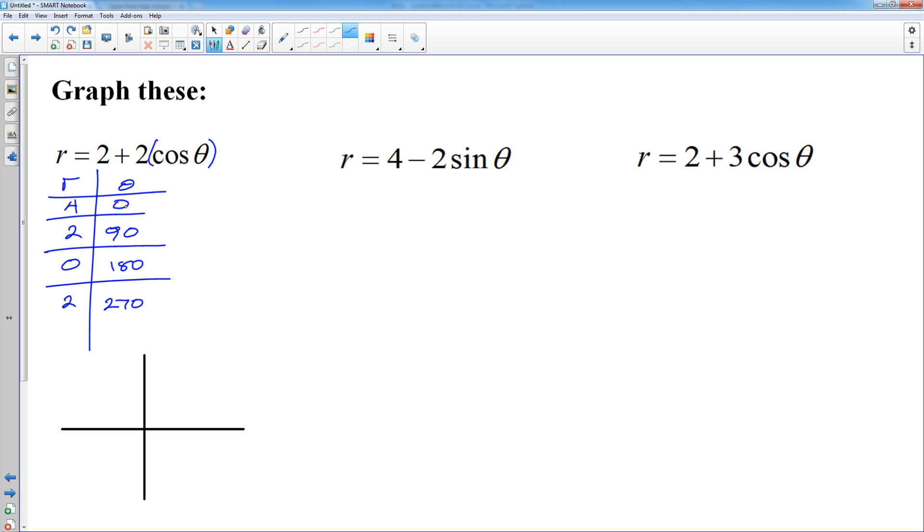So I need to go in the zero direction four units. One, two, three, four. Then in the 90 degree direction two units. One, two. In the 180 degree direction I don't go anywhere. So I'm going to stay right at zero. And then two units in the 270 degree direction. And I'll look at those four points. And I have three lined up right here. This one's a cardioid. It's going to come up, cusp at the origin, come back down, and do that.